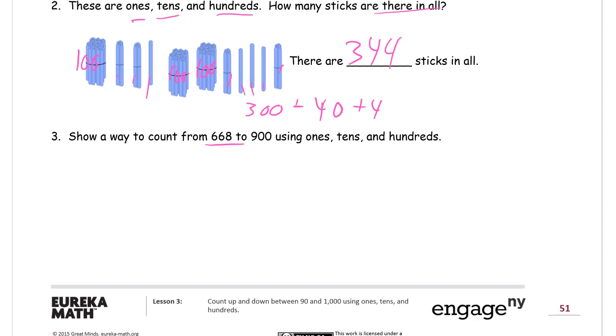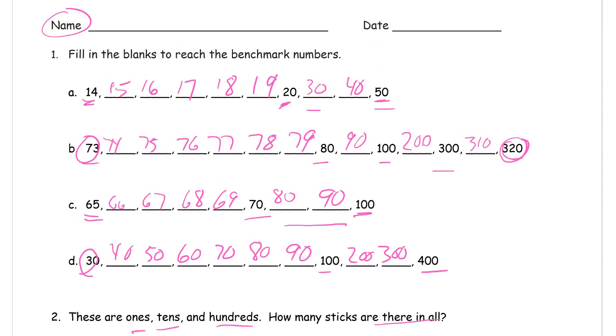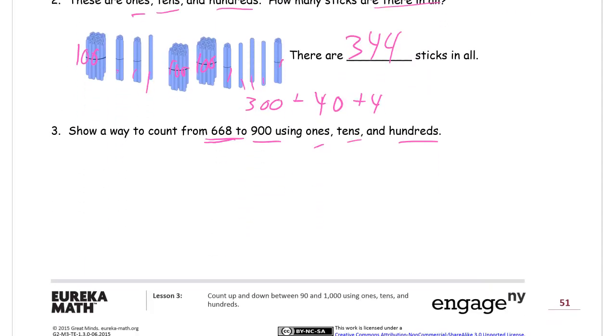Show a way to count from 668 to 900 using ones, tens, and hundreds. Now what this means is we're talking about like we did up here. These numbers are a lot larger than the ones we did before, but we're going to do it the same way: 668. I'm not going to write the 900 at the end because I'm going to just see how much room I need when I get there.